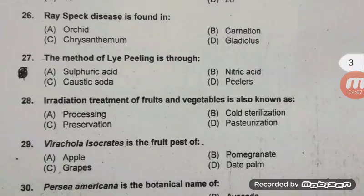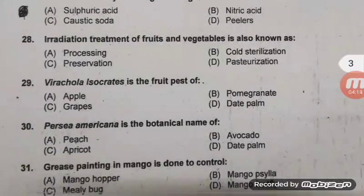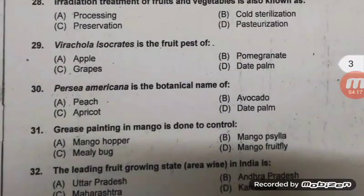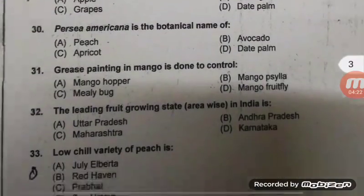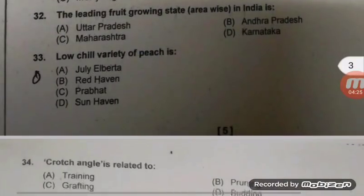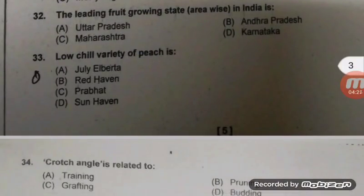Virachola isocrates fruit borer is a major pest of pomegranate — right answer; also known as fruit borer. Persea americana is the botanical name of avocado — B is the right answer. Grease painting in mango is done to control mealybug.